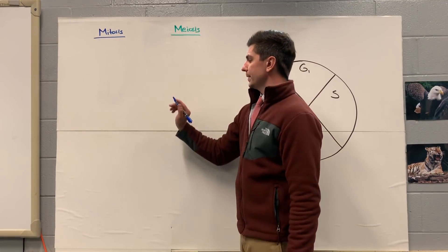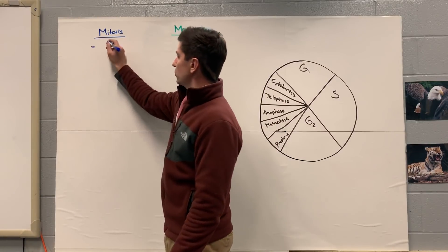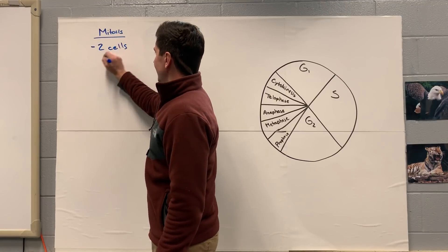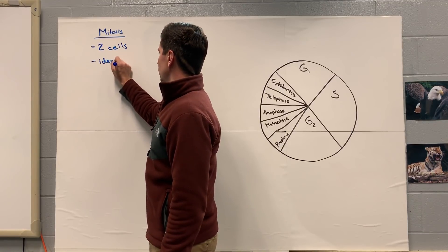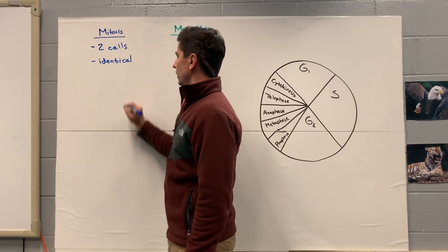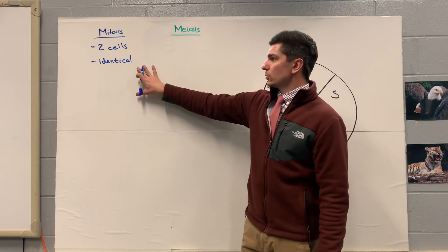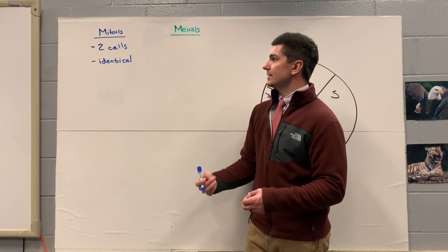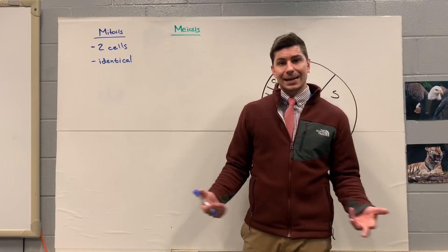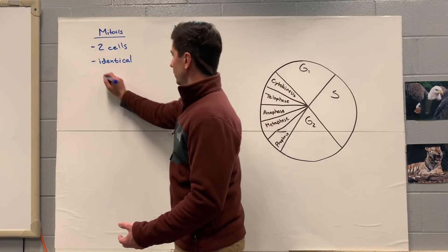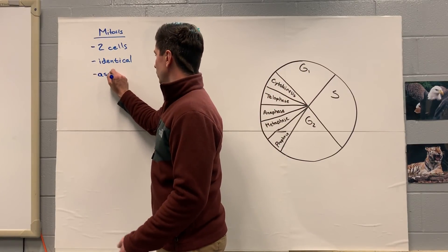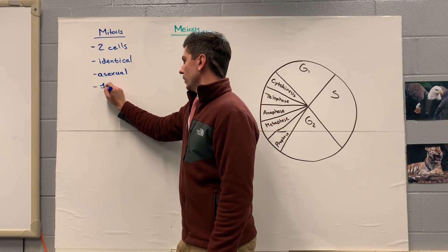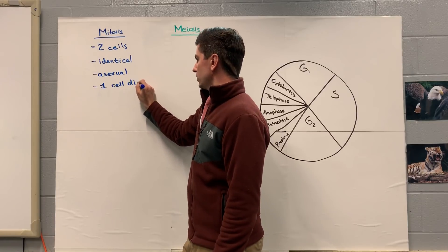To start off with mitosis, we are going to, in the end, create two cells. And these cells are going to be identical to one another. Every single cell has the same exact DNA as the parent cell. In other words, it's asexual reproduction. And along with this, we're going to have only one cell division - that's how we end up with two cells.